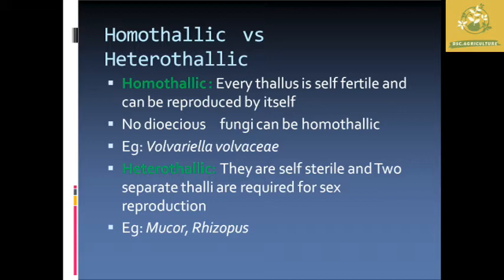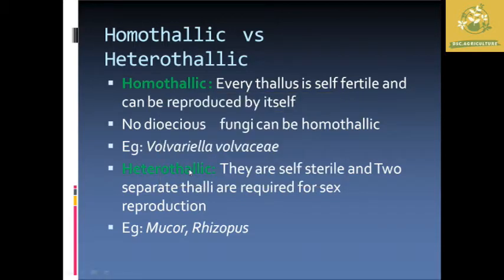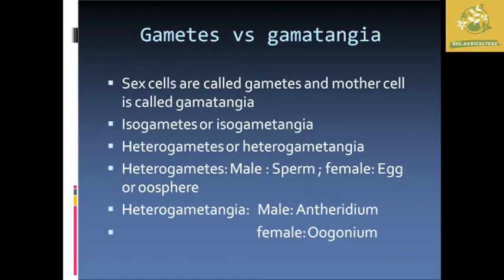The difference between homothalic and heterothalic: in homothalic, every thallus is fertile and can reproduce by itself — no separate fungus is needed. Example: Volvaria, Volvaceae. In heterothalic, fungi are self-sterile and two separate thalli are required to go for the reproduction process. Examples: Mucor and Rhizopus. Next is the difference between gametes and gametangia.